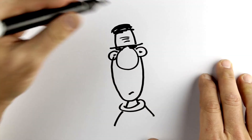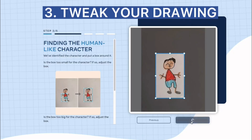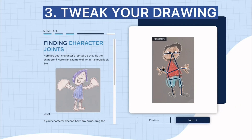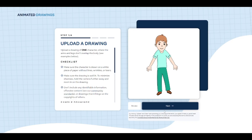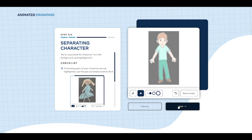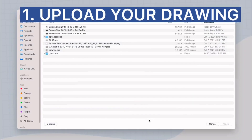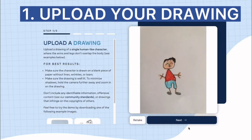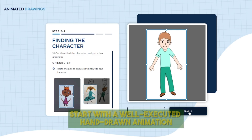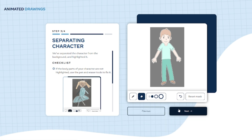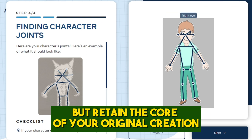For those who love to doodle, Animated Drawings is a game changer. This tool takes your hand-drawn sketches and turns them into animated masterpieces, with your creations jumping off the page into the digital realm thanks to AI. It's a research tool from Meta — just upload your drawing and it will create a video of it being drawn step by step. Tip: start with a well-executed drawing and use AI effects to accentuate specific movements while retaining the core of your original creation.